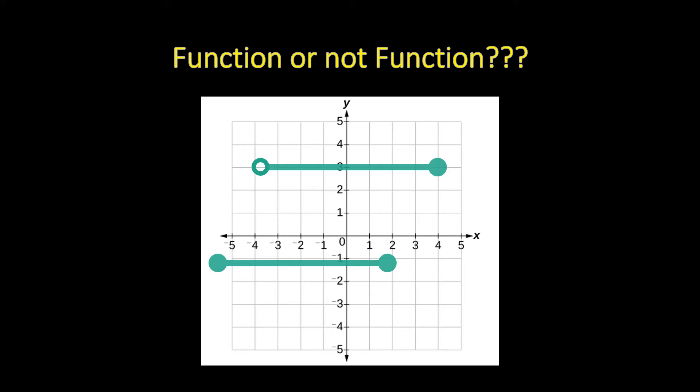In determining whether a graphing representation of your function or equation is a function or not, we have to make use of the VLT. The VLT is the Vertical Line Test, in which you draw a straight line anywhere on your graph. If that vertical line passes through more than one point on the graph, it automatically becomes not a function. If it only passes through one point, then it's a function.